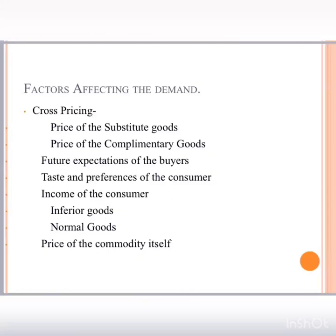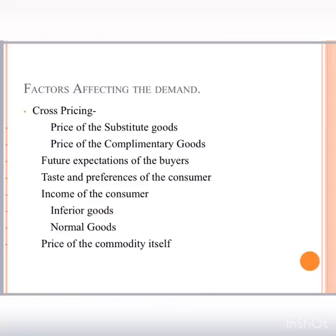To make it simpler with the tea and coffee example: if tea becomes expensive, people will resort to coffee and the demand for coffee will increase. When the price of tea falls, people find coffee relatively expensive and move back to tea, so demand for coffee decreases. Therefore, the price of a substitute good and the demand for our product move in direct proportion.